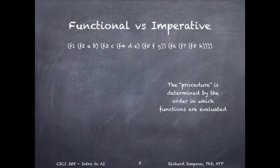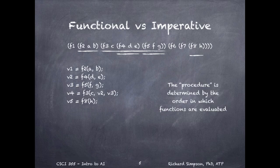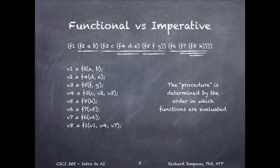For example, if this was a Lisp expression and we wanted to write the equivalent imperative language procedure, we'd start with F2. The rules of associativity in Lisp say that functions of equivalent precedence are evaluated left to right. After evaluating F2, we would look at the functions within F3, which means F4 would be evaluated, followed by F5. Those intermediate values would be used to calculate F3. The process would repeat, looking inside F6 and then F7 to get to F8. Then we could evaluate F7, and then F6, and finally F1.